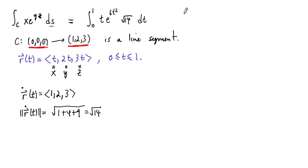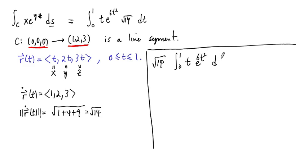Okay, so we need some more room. We don't need a ton more room, though. So I'm just going to draw a little line here and compute this down here. So I'm going to rewrite it. The square root 14, obviously, can be factored out. And then we need to integrate 0 to 1, t, e to the 6t squared dt.